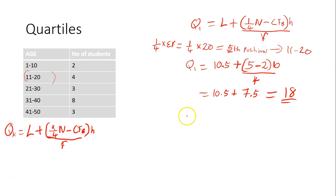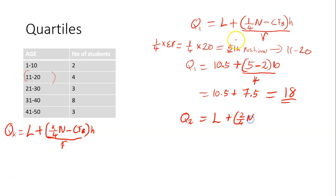So let's find the second quartile. The second quartile formula will be L plus into brackets 2 over 4 N — this was 1 over 4, but now it's 2 over 4 — minus CFB times H divided by F.